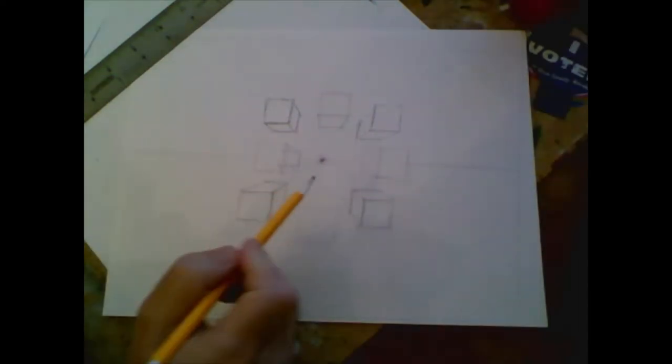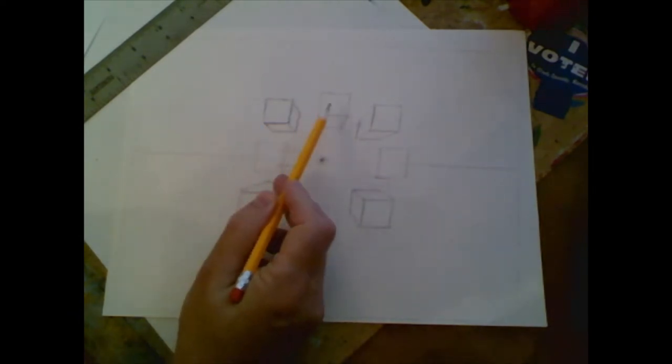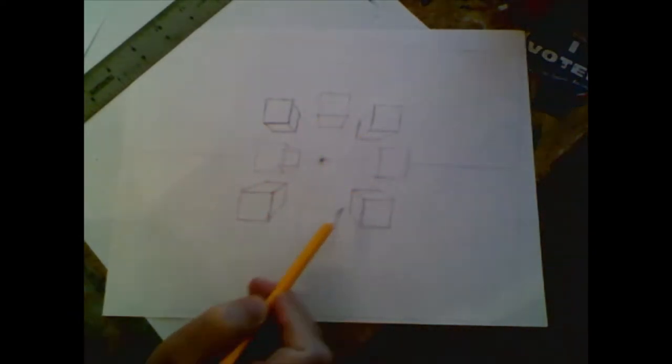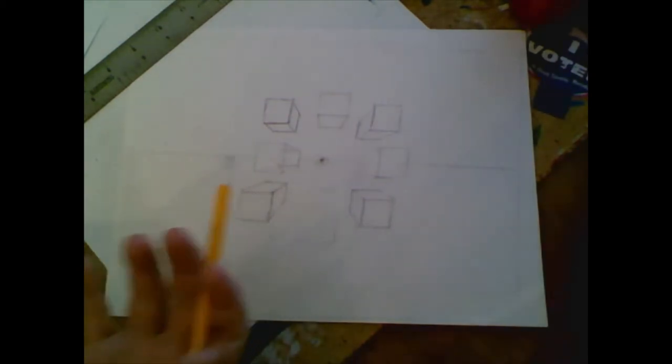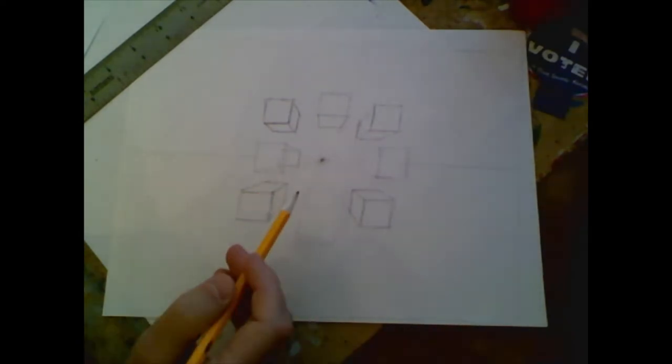Last week we learned about one point perspective that has only one vanishing point. And if you notice, all of the cubes here, one side is facing us. But what happens if you want to draw a cube where the corner is facing us?